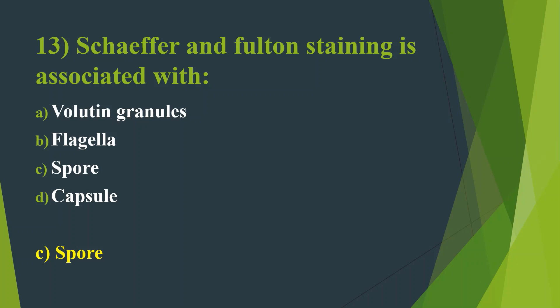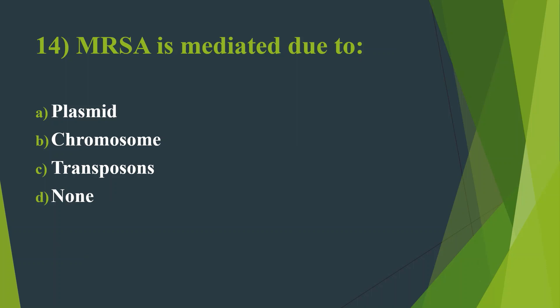Fourteenth question: MRSA is mediated due to — Option A: Plasmid. Option B: Chromosome. Option C: Transposons. Option D: None. Here the answer is Option B, Chromosome. MRSA means Methicillin-Resistant Staphylococcus aureus. The mecA gene — carried on the staphylococcal chromosomal cassette gene (SCCmec) — is responsible for MRSA. MRSA is responsible for several difficult-to-treat infections in humans and has caused more than 100,000 deaths due to antimicrobial resistance.